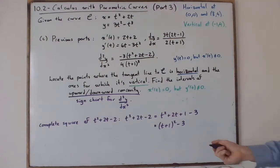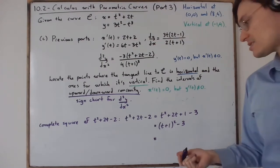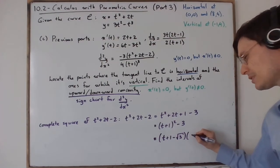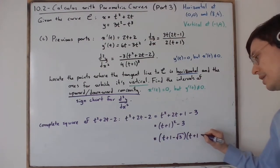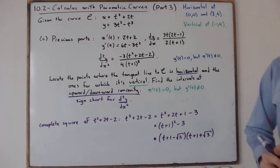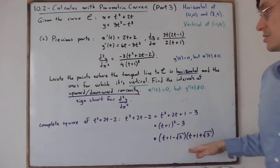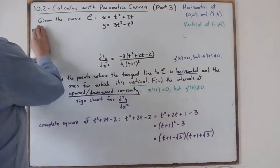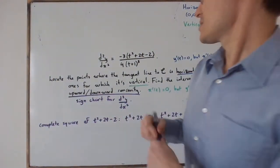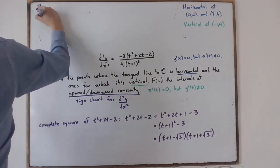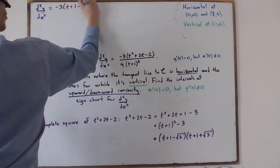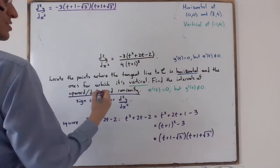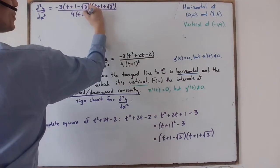Using the difference of squares formula on (t + 1)² − 3, we get (t + 1 − √3)(t + 1 + √3). So d²y/dx² equals negative 3 times (t + 1 − √3) times (t + 1 + √3) over 4 times (t + 1)³. Now we have the factored form needed to make a sign chart.